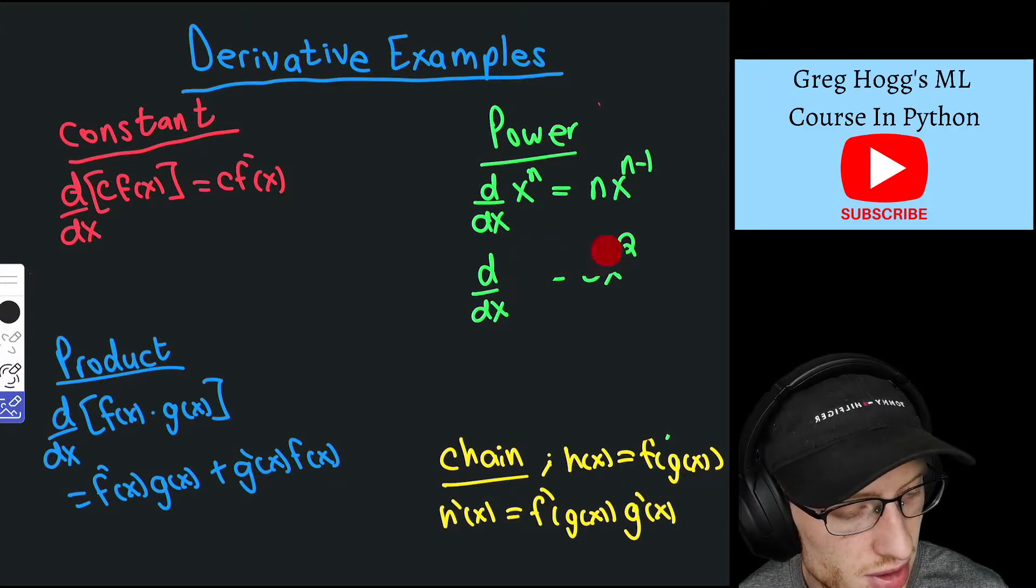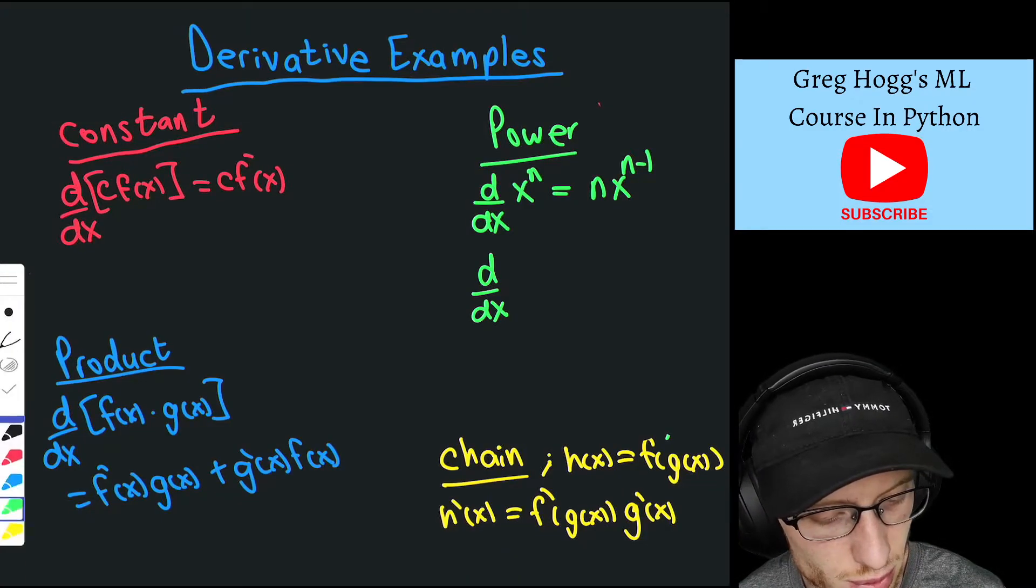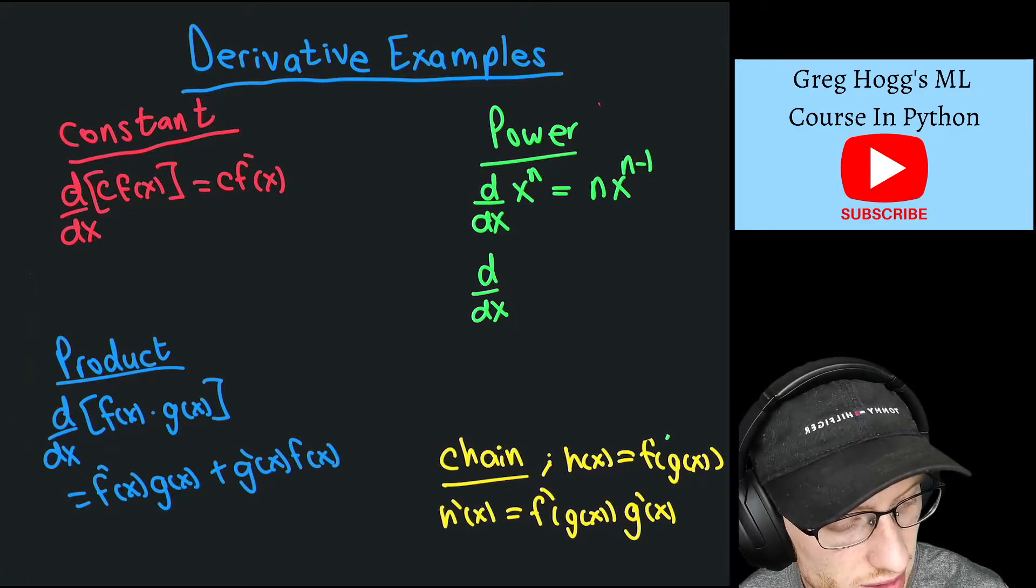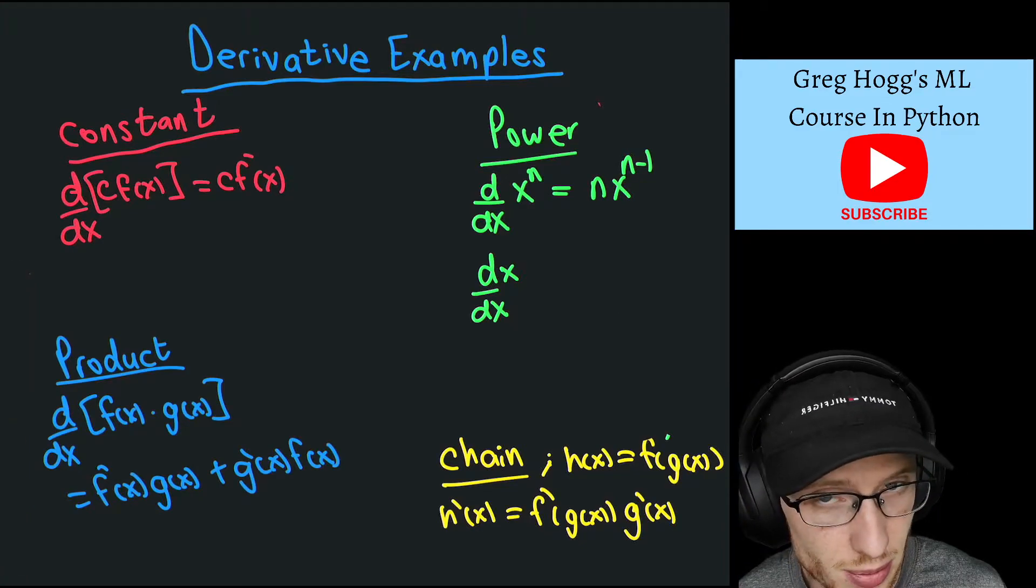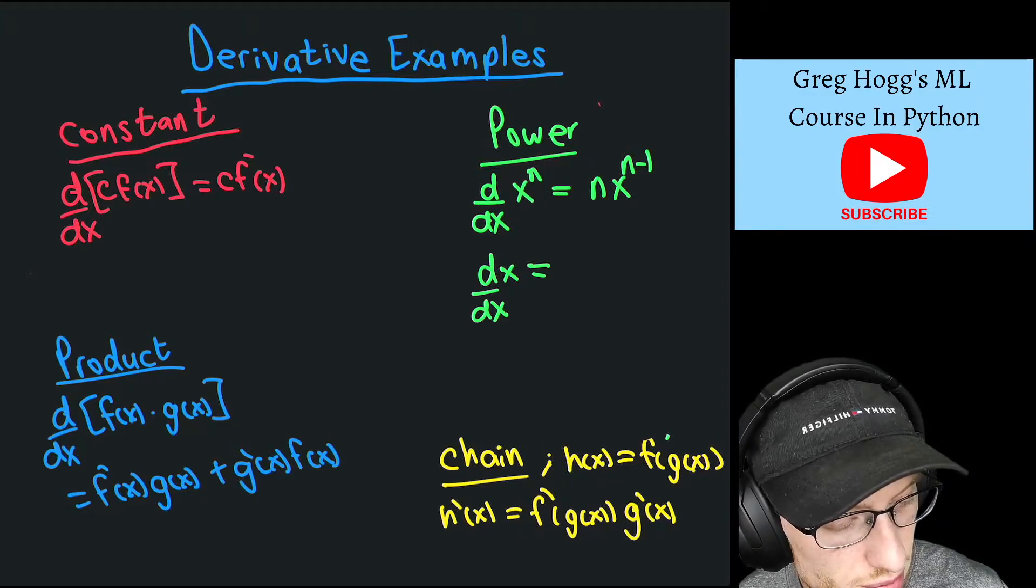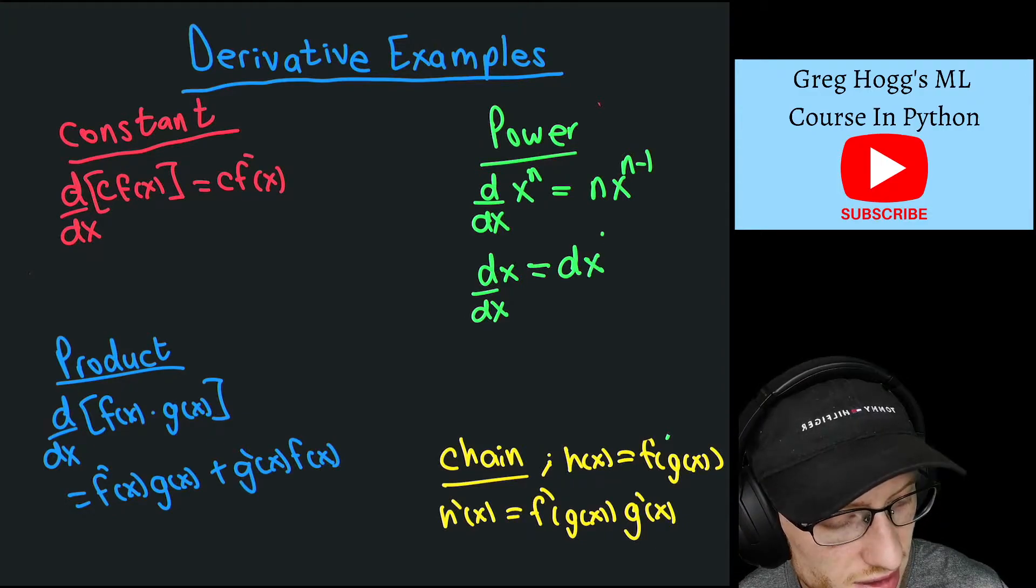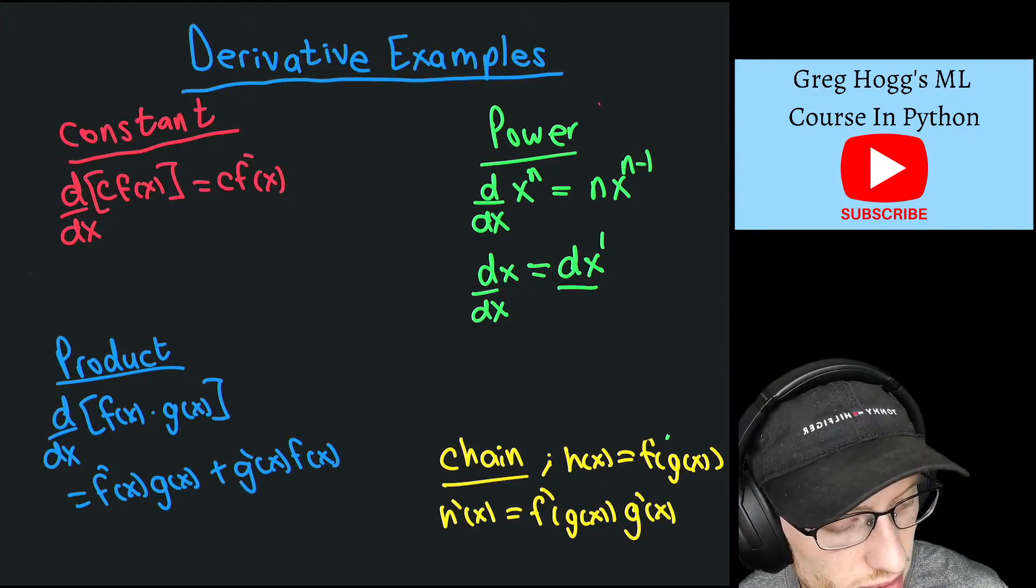Now let me show you the derivative of x with this rule. So dx/dx is equal to, I'm just writing this slightly differently, it's the exact same thing, d(x^1)/dx.